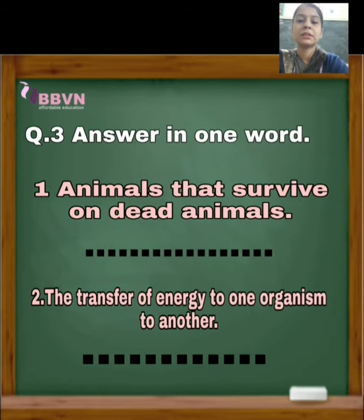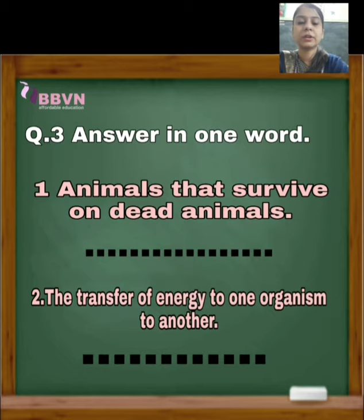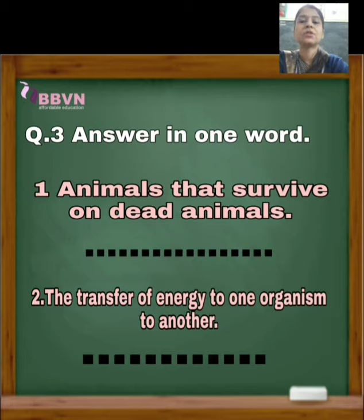Question number 3: Answer in one word. Number 1: Animals that survive on dead animals. जो animals dead animals पे depend होते हैं, उनकी body को खाकर survive करते हैं, उन animals को किस नाम से जाना जाता है? आपको one word में answer देना है. Number 2: The transfer of energy from one organism to another. जो energy का एक organism से दूसरे organism में transfer होना क्या कहलाता है? आपको इन दोनों questions के answers one word में देने हैं.